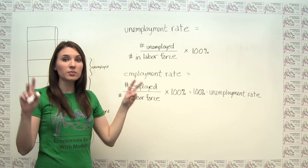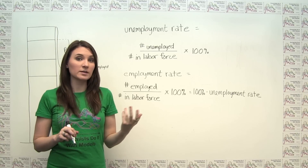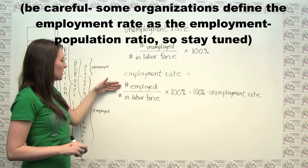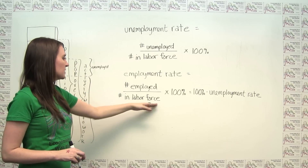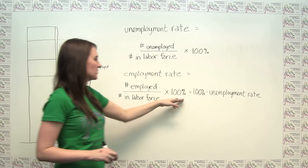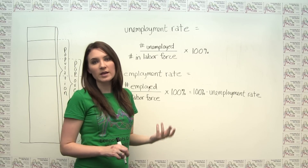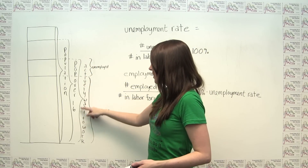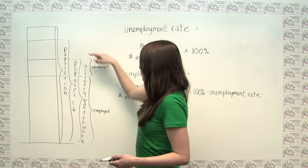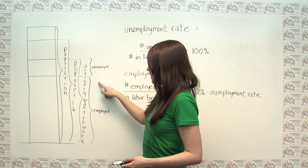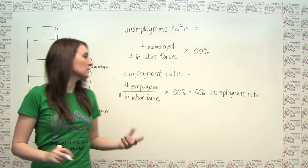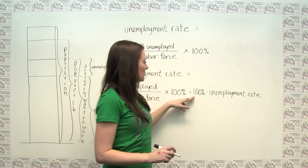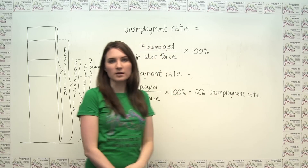We can also refer to an employment rate, which is equal to 100% minus the unemployment rate. The employment rate can be expressed as the number of employed people divided by the number of people in the labor force times 100%. Because everybody in the labor force is either employed or unemployed, we're just partitioning the total labor force into unemployed and employed, so the employment rate has to equal 100% minus the unemployment rate.